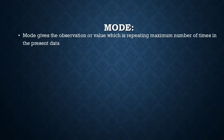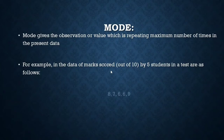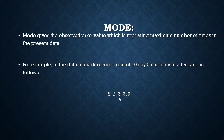Mode is the observation in our given data which repeats the maximum number of times. For example, in the data of marks scored by 5 students in a test — say the marks are 10, 8, 7, 6, 6, and 9 — the value repeating maximum number of times is 6, so 6 is the mode.